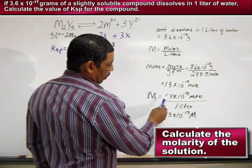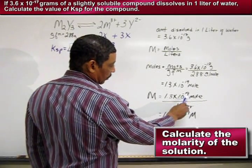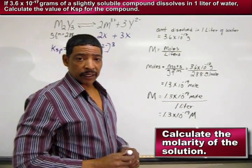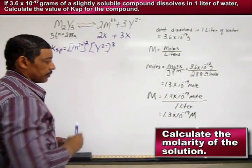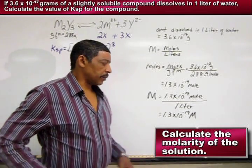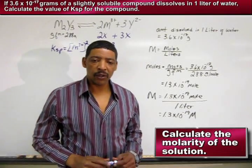In this case, 1.3 times 10 to the -19 moles divided by 1 liter, which is the volume of water in which the compound was dissolved, will equal a molarity of 1.3 times 10 to the -19 molar.